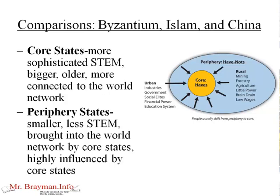Often these were the civilizations that rose first — the Middle East, Egypt, and China — with the exception of Byzantium. They are the so-called haves, the people who have stuff, and they focus on things that require a lot of education and technology to accomplish. The periphery states — periphery meaning around the outside or edges — are smaller and have less STEM capabilities. They're often brought into the world network by core states and highly influenced by them.